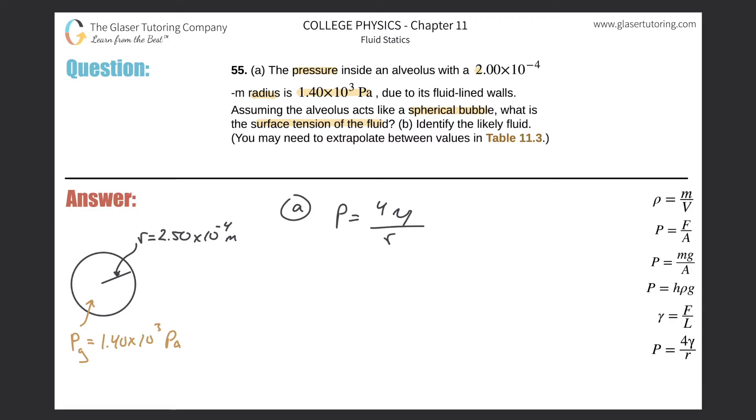So now what we're after is surface tension, so just solve this thing for gamma, right? Cross multiply here. This is the magic, right? Just bring the R up here, bring the 4 down here, and there you go. You got it. That's all it is.